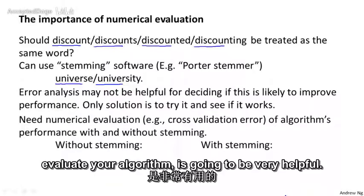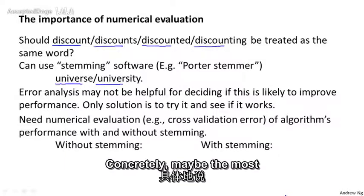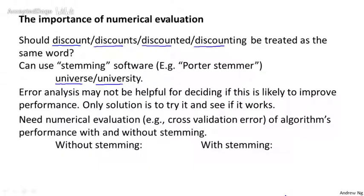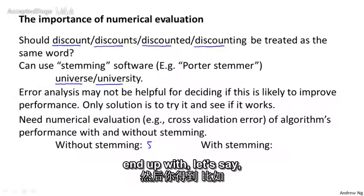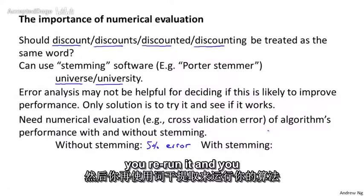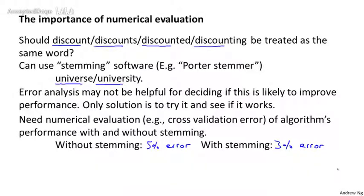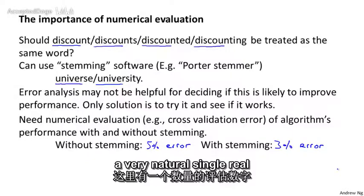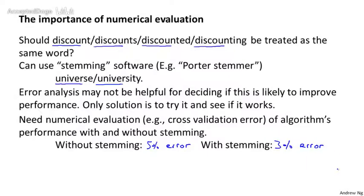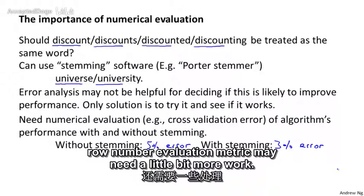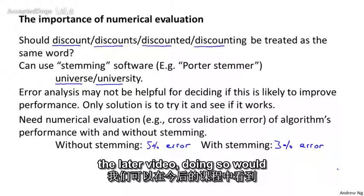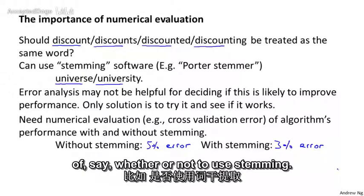And in order to do this, having a way to numerically evaluate your algorithm is going to be very helpful. Concretely, maybe the most natural thing to do is to look at the cross-validation error of the algorithm's performance with and without stemming. So if you run your algorithm without stemming and you end up with, let's say, 5% classification error, and you rerun it and you end up with, let's say, 3% classification error, then this decrease in error very quickly allows you to decide that, looks like using stemming is a good idea. For this particular problem, there's a very natural single real number evaluation metric, namely the cross-validation error. We'll see later examples where coming up with this sort of single real number evaluation metric may need a little bit more work. But as we'll see in a later video, doing so would also then let you make these decisions much more quickly of, say, whether or not to use stemming.